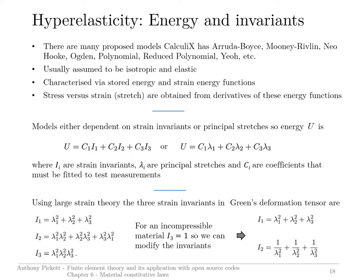The models tend to fall into two categories. Most of them use the general expression shown here, which involves three invariants. Each of these invariants is calibrated using a coefficient, which has to be calibrated against test measurements. There is another model, the Ogden model, which uses directly the principal stretch values in the 1, 2 and 3 directions instead of invariants. But again, we have to do some calibration against test measurements in order to get a good agreement between the model and the test measurements.